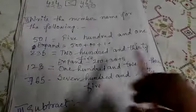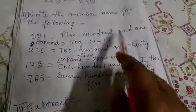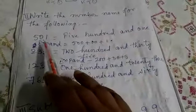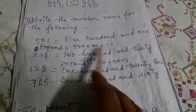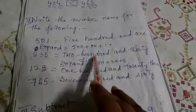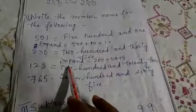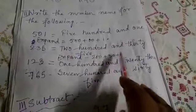Write the number name. 501. Expand, how will you do? 500 plus 0 tens plus 1. 235. Expand: 200 plus 30 plus 5.